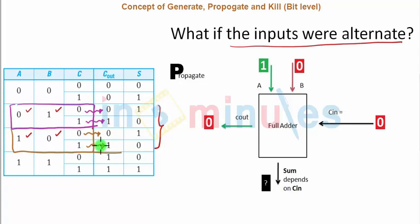So we understand that if my inputs alternate, my carry in is propagated or passed to the output. Very simple. If A is 1 and B is 0, it could be the other way around also. If A is 0 and B is 1, my C out will be equal to C in. In this case my C in is 0, so my C out is 0. If my C in would have been 1, then my C out would have been also equal to 1.